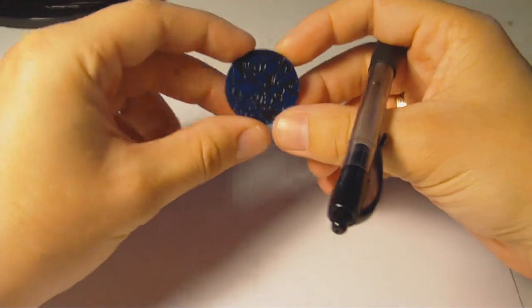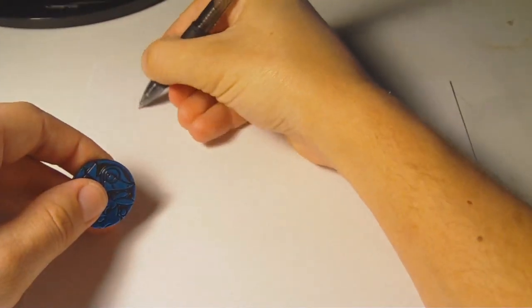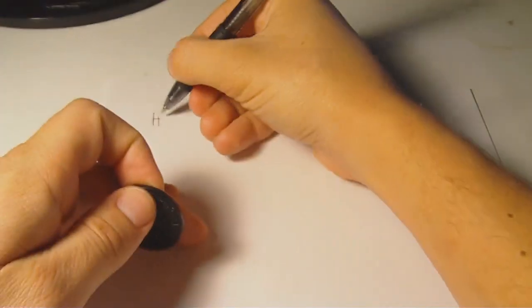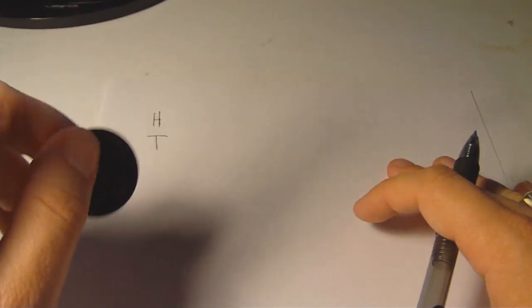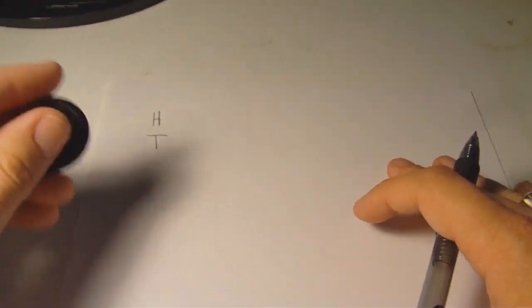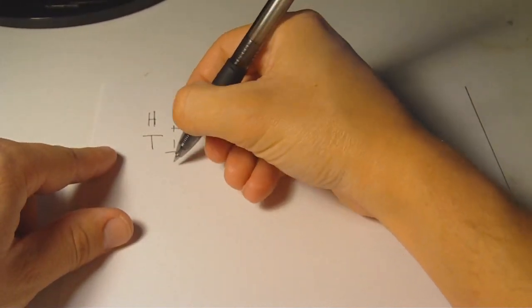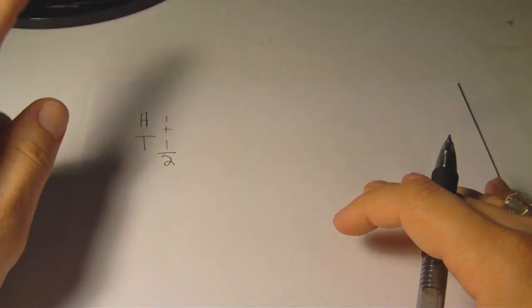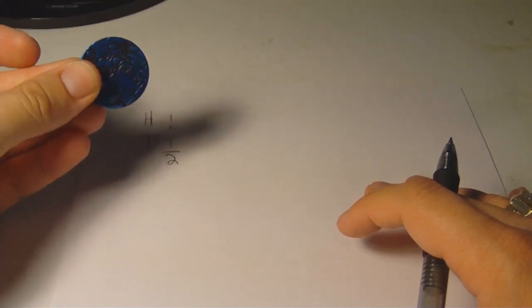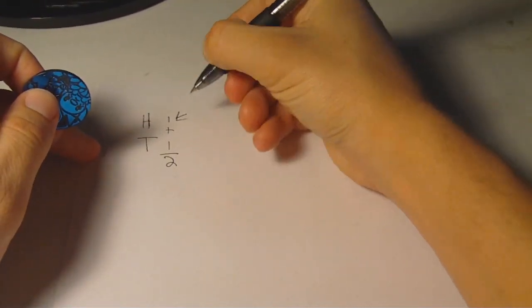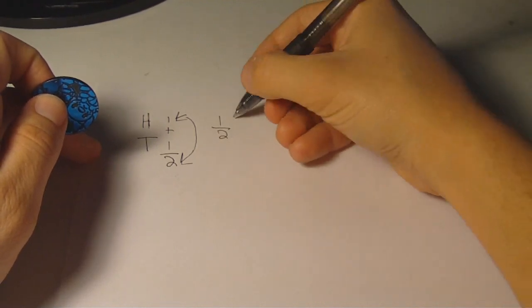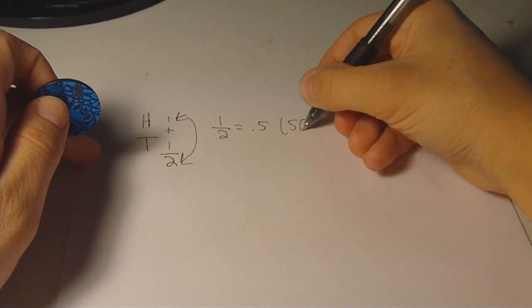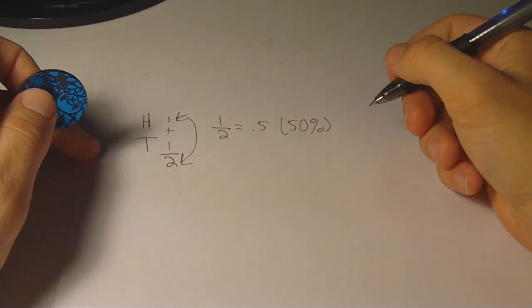When you flip a coin, there are two possible results. To calculate the probability of a result, you take the number of results and divide them by the total number of results. In this example, the total number of results is two: heads and tails. If we wanted to find the probability of flipping heads, we would take the one result — heads — and divide it by the total number of results, which is heads or tails. Thus we get 0.5, or a 50% chance of flipping heads.